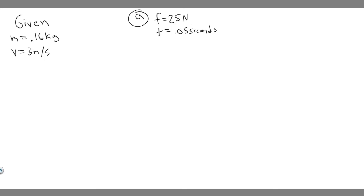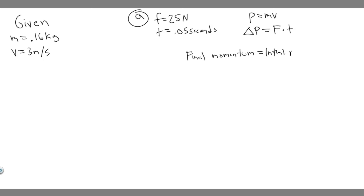We're going to solve this problem using momentum. Momentum P is equal to mass times velocity. The other key concept is impulse — the change in momentum — which equals force times time. So if we have a force and multiply it by time, that gives us the impulse. The formula we'll use is: final momentum equals initial momentum plus impulse.